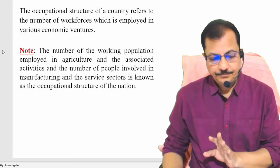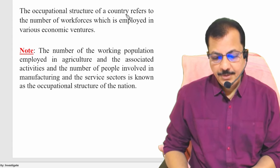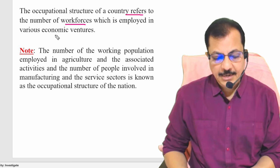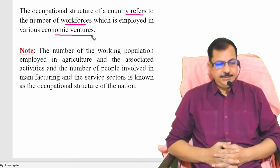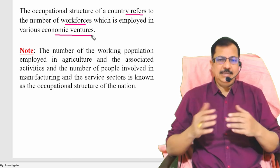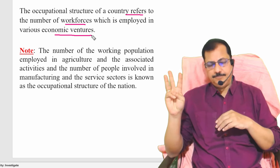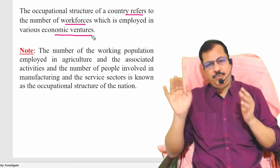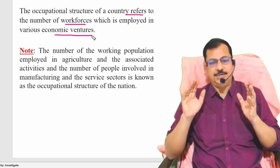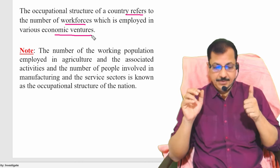The occupational structure of a country refers to the number of workforces employed in various economic ventures. Occupational structure means how many people are employed in the primary sector, how many in the secondary sector, and how many in the tertiary sector. Whenever we mention occupational structure, we take the working age force — people aged between 15 and 64 — into consideration.